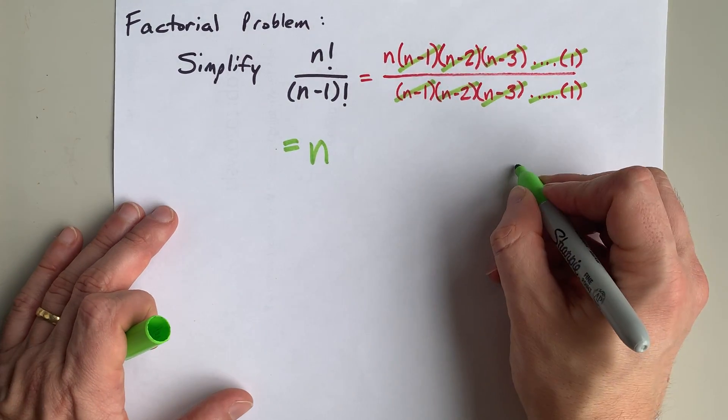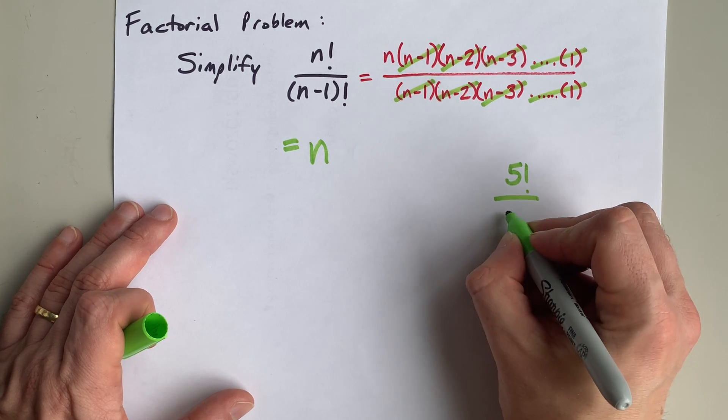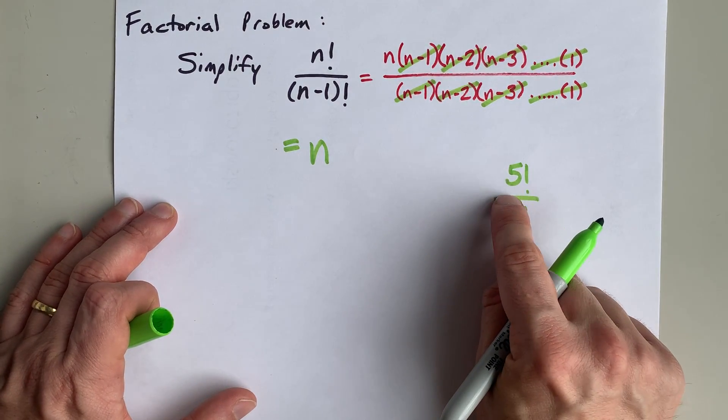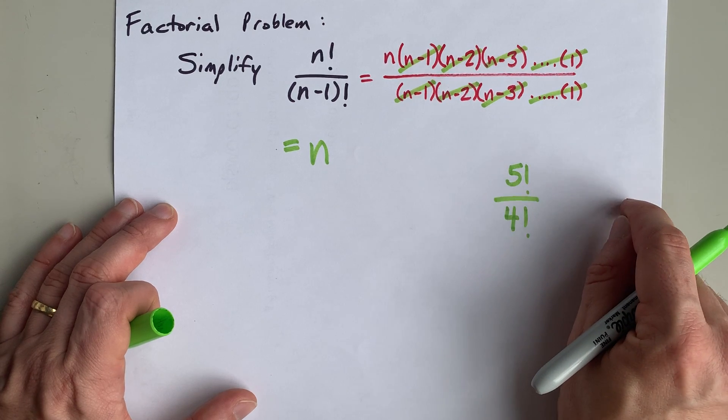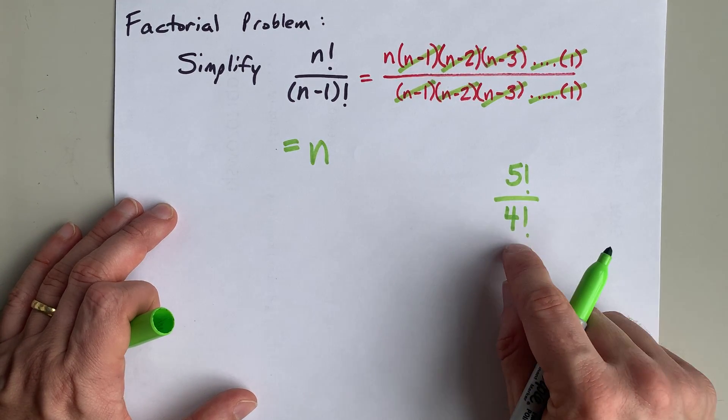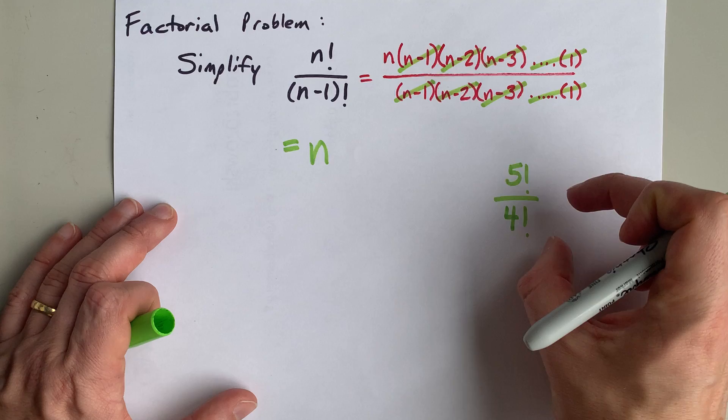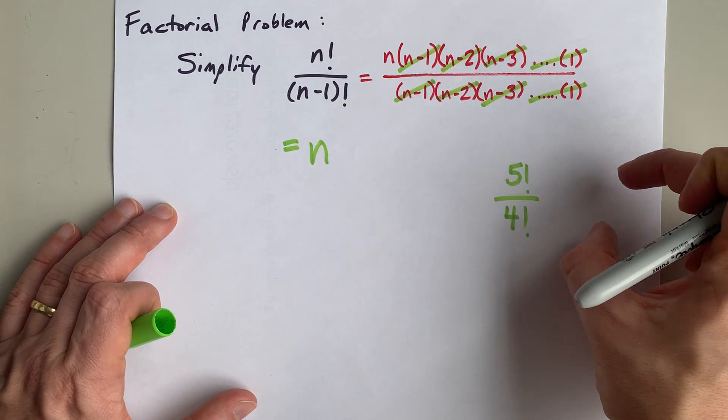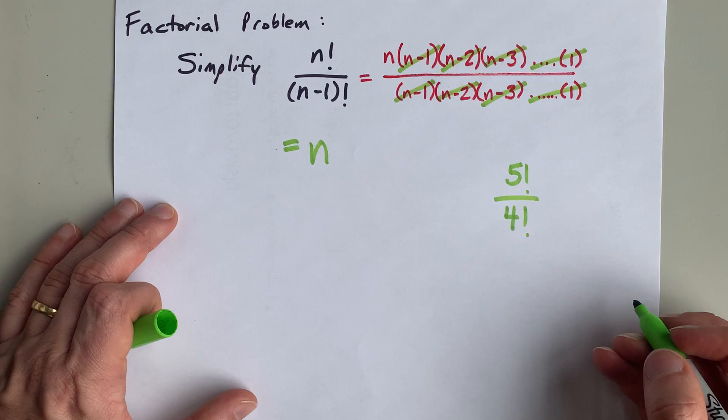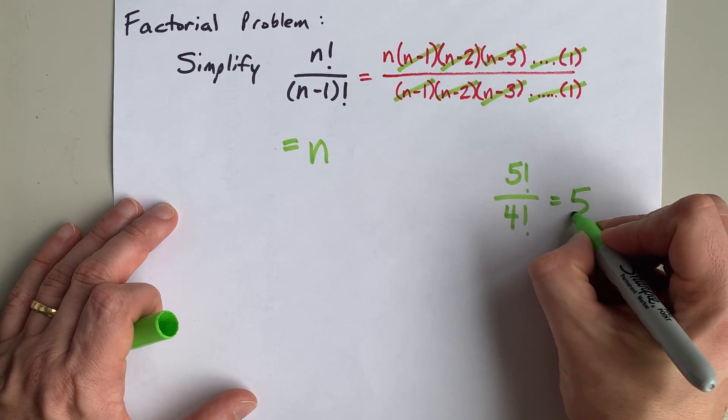Meaning, if you had 5 factorial over 4 factorial, this is 5 times 4 times 3 times 2 times 1, and the bottom is 4 times 3 times 2 times 1, and 4, 3, 2, 1, all cancel from the top and bottom, and you're left with just 5.